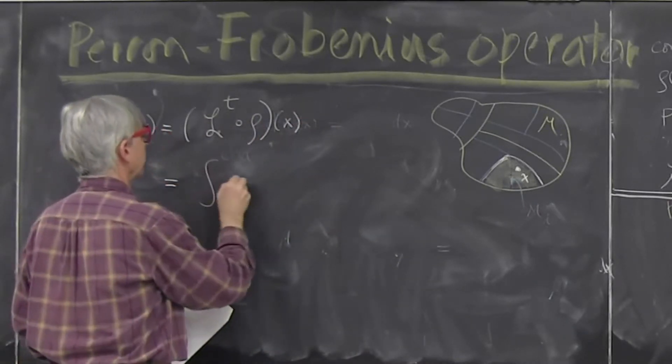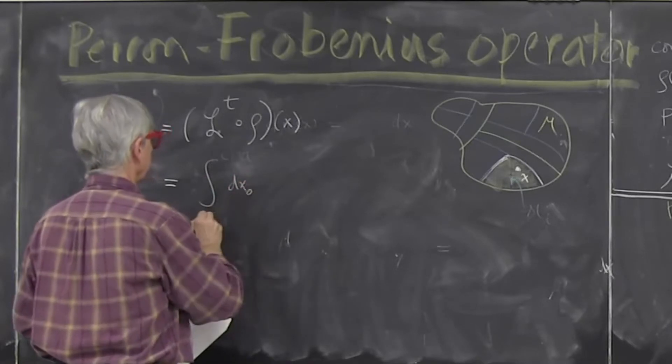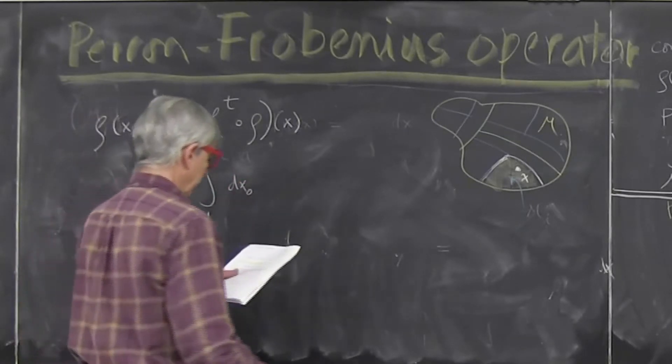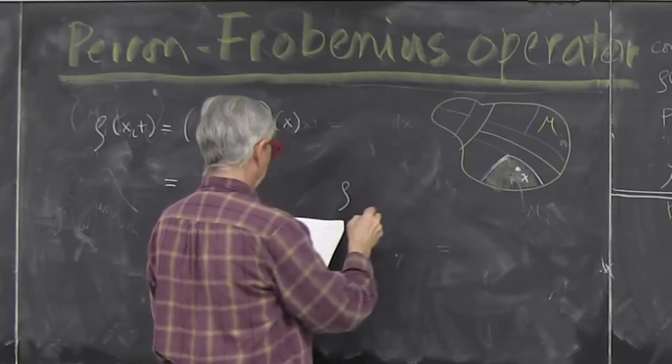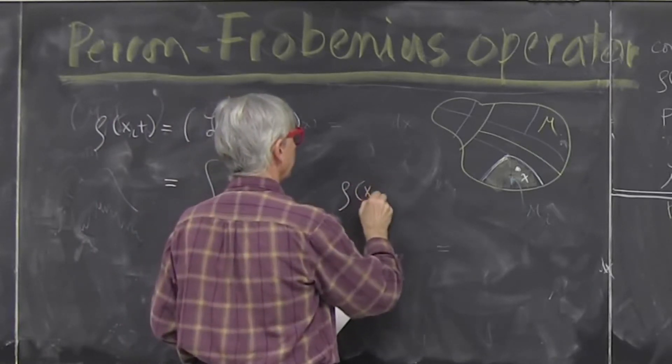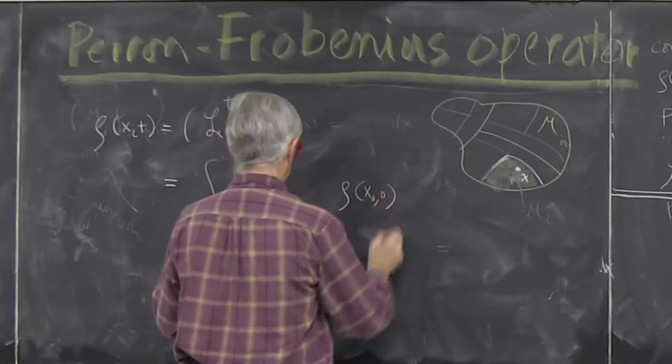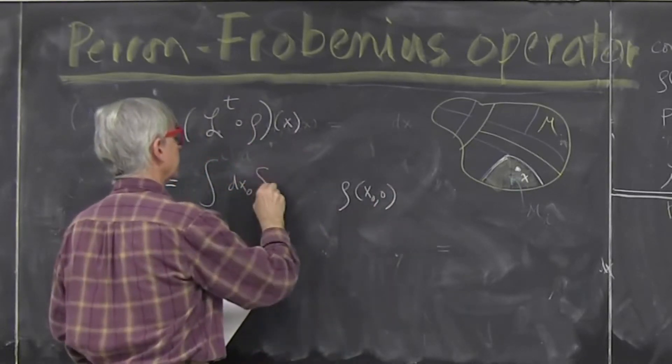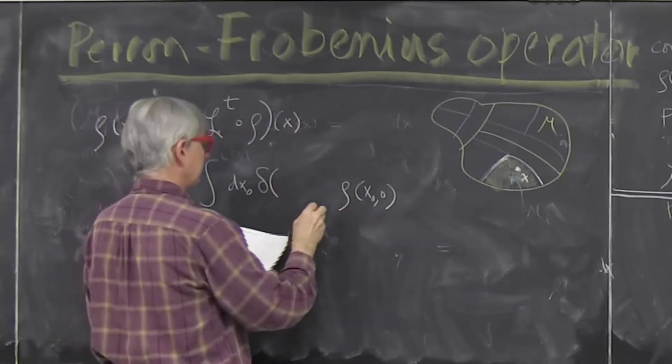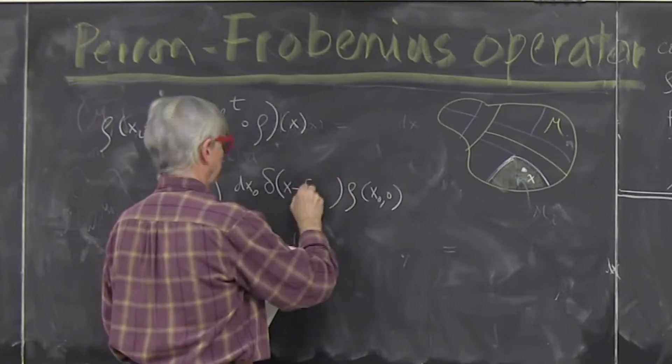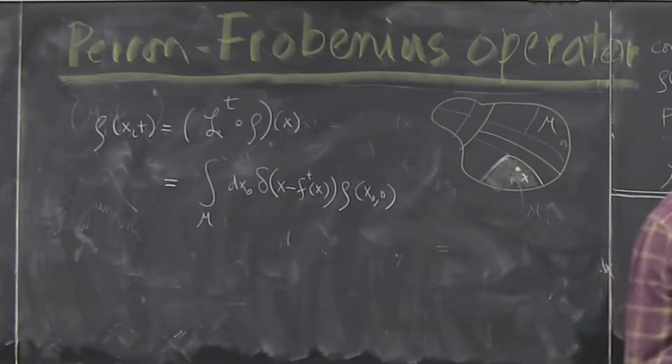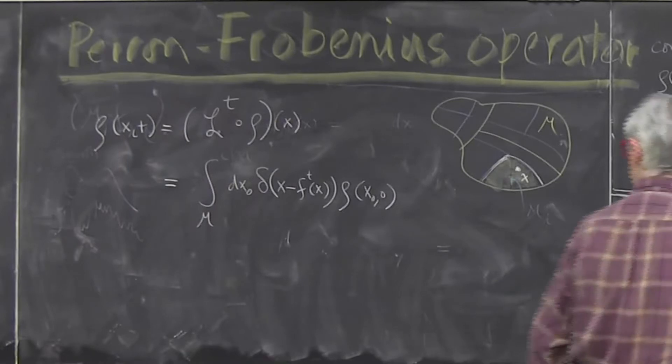which is integrate initial volume function take the initial density and stick in a delta function, Dirac delta function